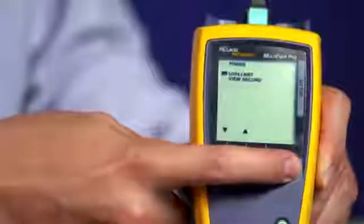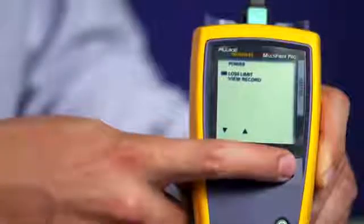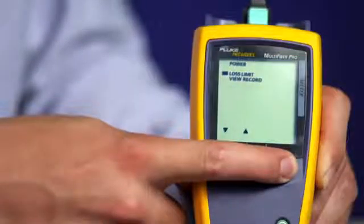Press MENU again and use the F1 or F2 key to set your designated loss limit value. Now press MENU once to save, and press and hold MENU to go back to the main screen.